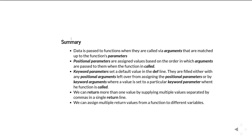In summary, in this unit we've talked a lot about passing data into functions. When we talk about passing data into functions, we refer to the arguments in the call being matched up to the function's parameters. There are two sorts of parameters: positional parameters, which appear first in the def line and are assigned values based on the order arguments are passed; and keyword parameters, which have a default value set in the def line and are filled either with spare positional arguments or by matching keyword arguments where you specify which keyword parameter should have which value. Keyword arguments don't have to be in the same order as the keyword parameters were defined, whereas positional arguments do.